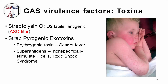Group A strep possesses a number of toxins that are responsible for some of its pathologic effects. Streptolysins are enzymes responsible for the beta-hemolysis activity of group A strep. They are released from the cell and act to lyse both red and white blood cells. Streptolysin O is one such streptolysin — it stands for oxygen labile, meaning this enzyme is inactivated in the presence of oxygen. Streptolysin O is antigenic, meaning that plasma cells will form anti-streptolysin O antibodies against it. These antibody levels, called ASO titers, can be checked in patients whom you suspect had a recent strep infection, although this test is not commonly done.